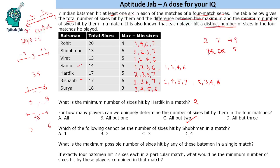What is the maximum possible number of sixes hit by any batsman in a single match? The maximum is definitely seven, but if the Rishabh scenario with two and eight applies, the maximum can go to eight. Since the question asks for the maximum possible — not the definitive maximum — the answer is eight.